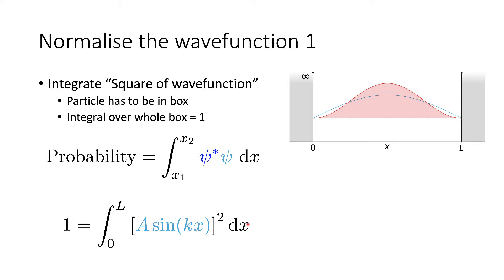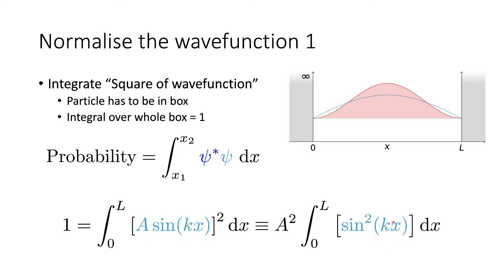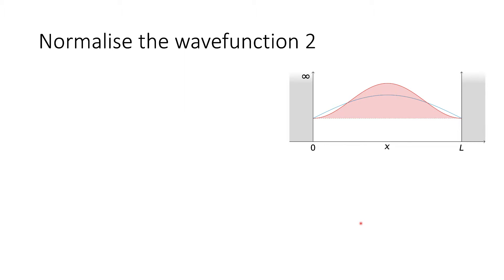We're going to quickly rewrite this to simplify things. We take our constant A out of the integral, because it has no relevance to the integral itself, and all we're worrying about is the function inside. Be aware of the notation: sine squared is equivalent to sine all squared. We just need to integrate this. However, we do need to do a substitution for sin²(kx).